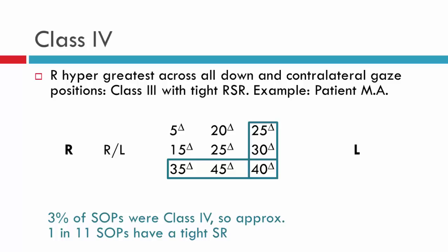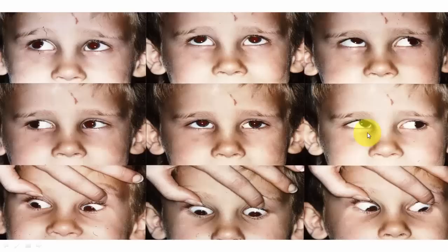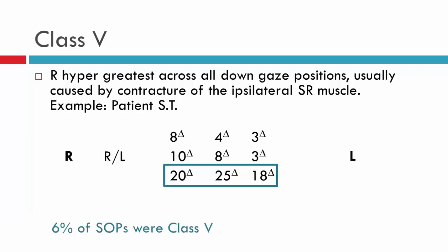Unfortunately there is no patient image of a class four available, but what you would expect is that the right on left seen in contralateral gaze would continue into ipsilateral positions as well. The right on left would also continue in dextrodepression, and would be similar in size to that seen in contralateral gaze.